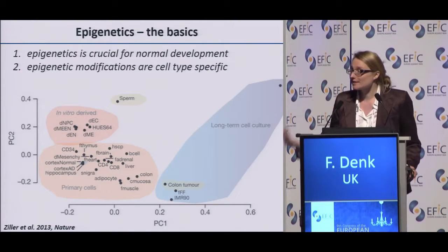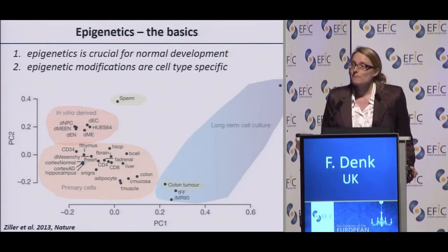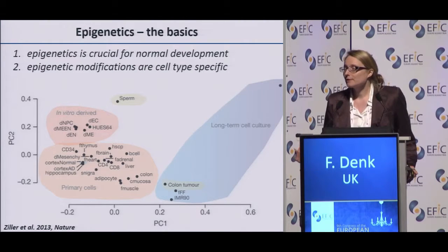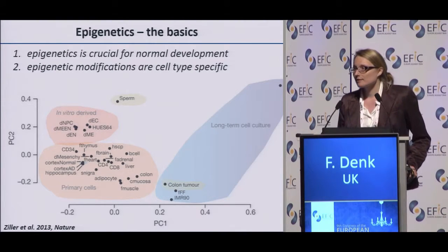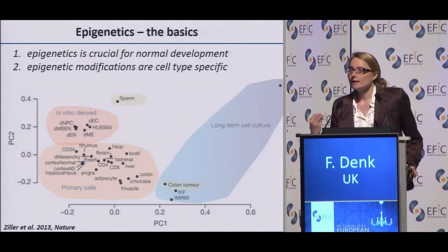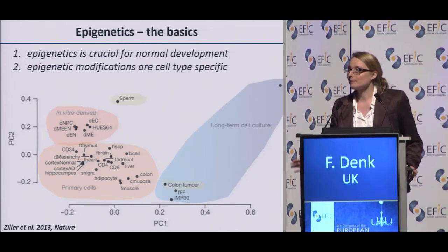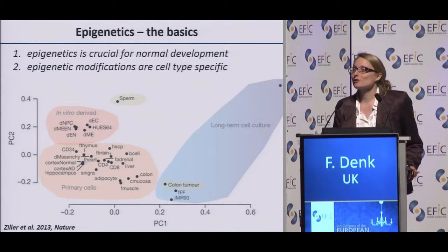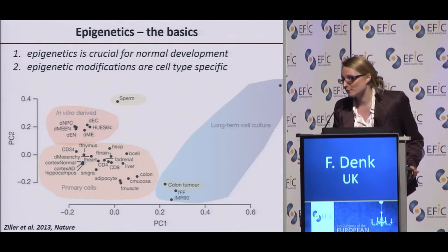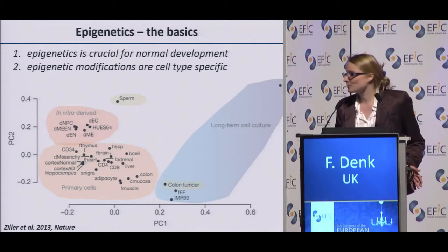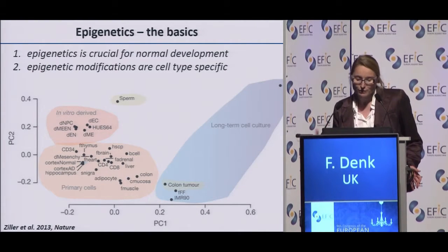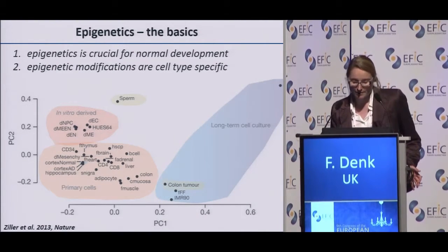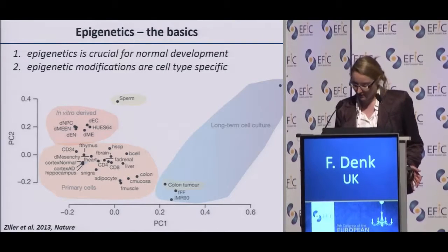As an example, the Blueprint Consortium, which is tasked with characterizing the epigenome of all cells in blood, requires researchers to submit cells that are 95% pure. That's what we really have to study to be able to understand epigenetics: pure cells.